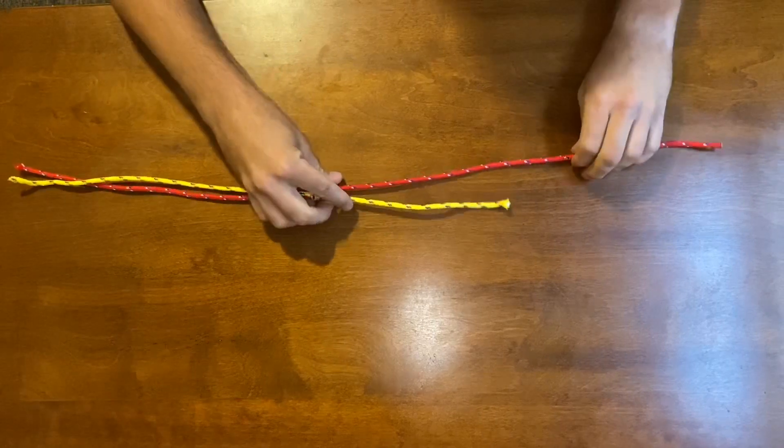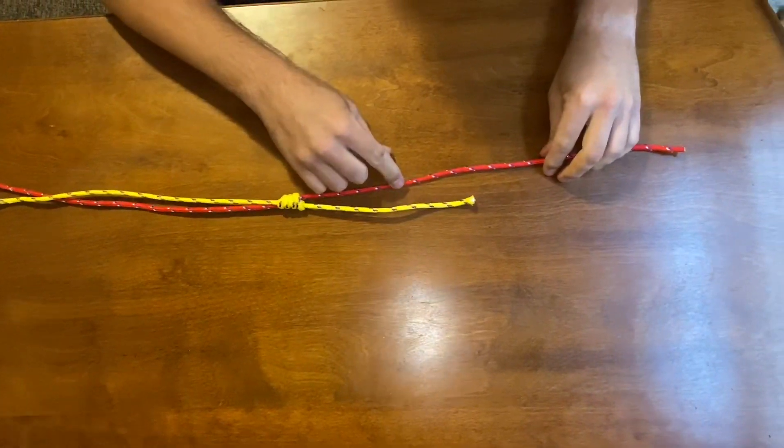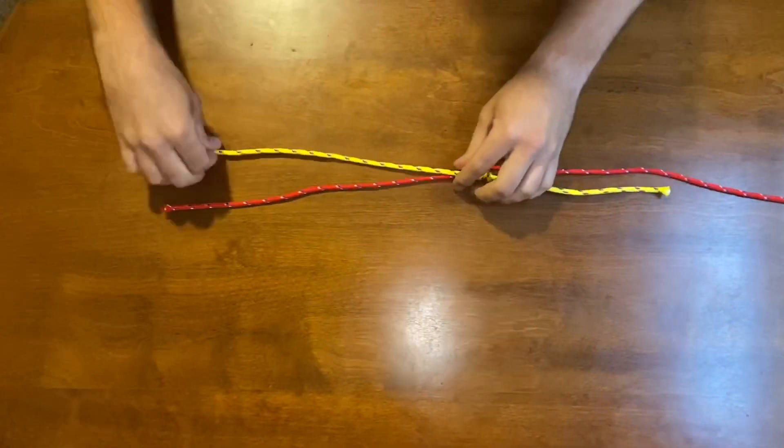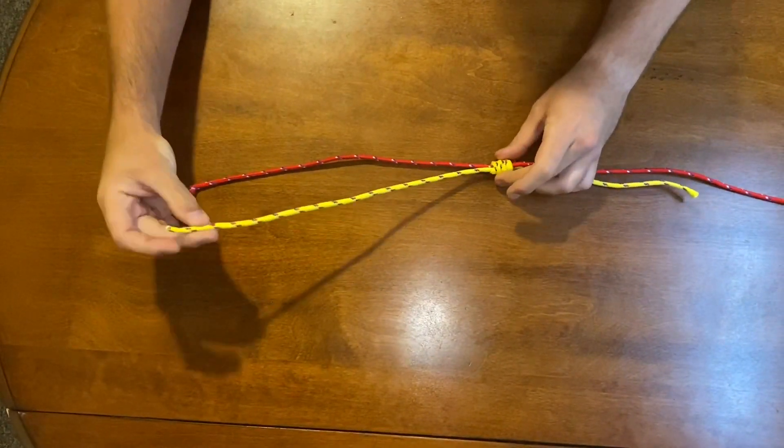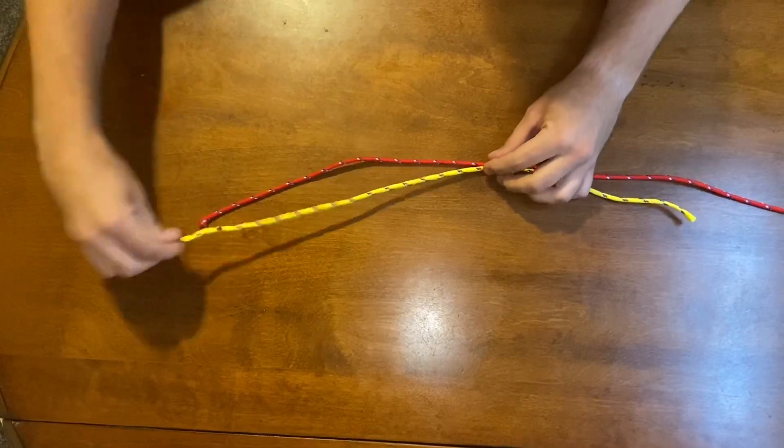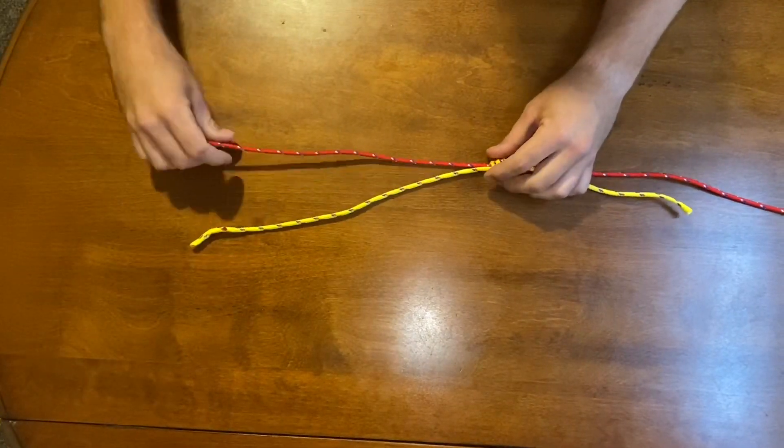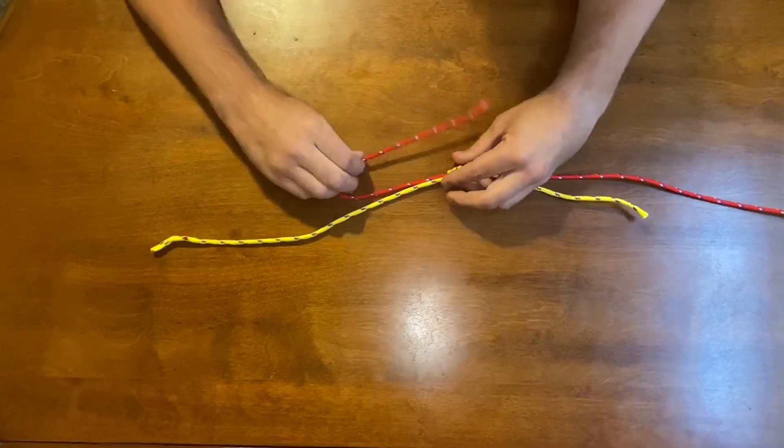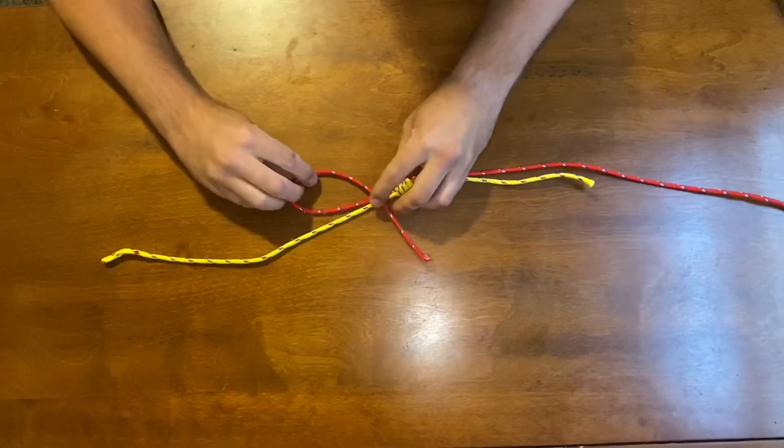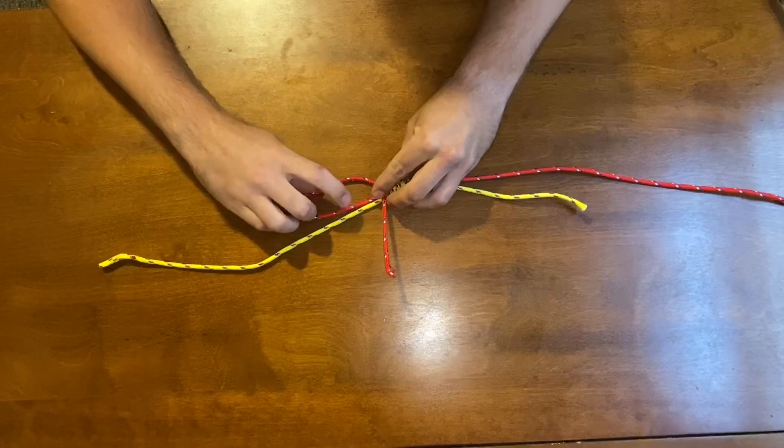Then you're going to do the same thing on the braided line up here. This would be your tag end on the braid. This would be your fluorocarbon leader, but this keeps going back to where your bait's going to be. You're going to loop this back on itself, then loop it over top of the fluorocarbon leader and the braid.